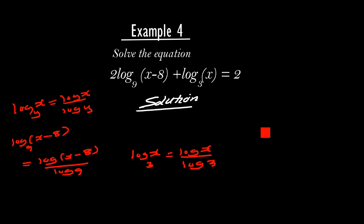Now, 9 can be factorized in terms of 3: 9 is the same as 3 squared. So log 9 is like log 3 squared, and log 3 squared is the same as 2 log 3 — the power can be written as the coefficient.